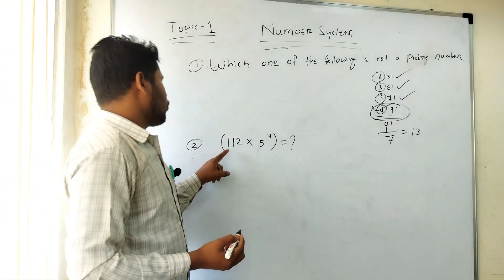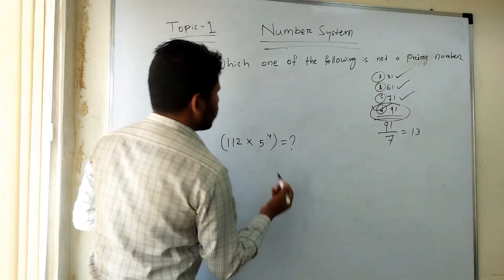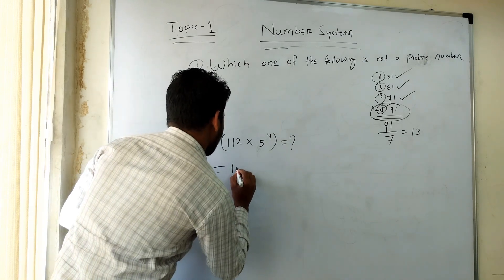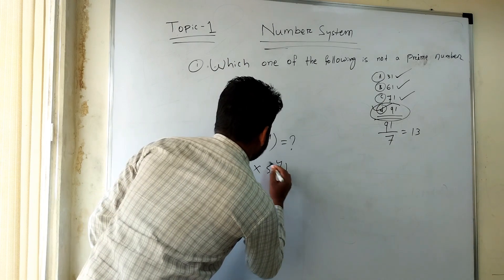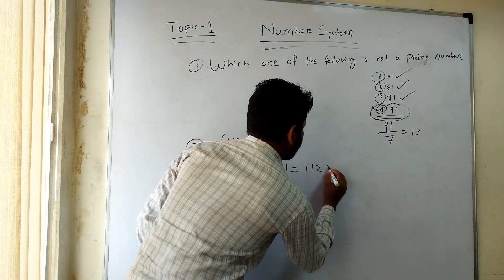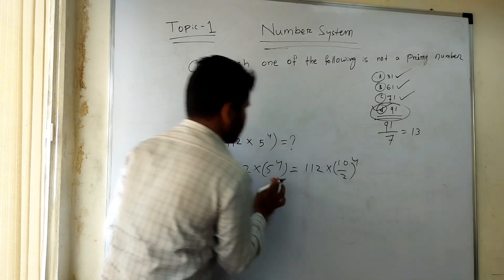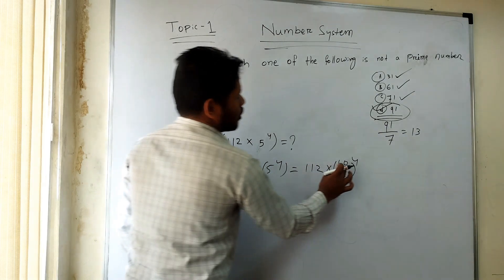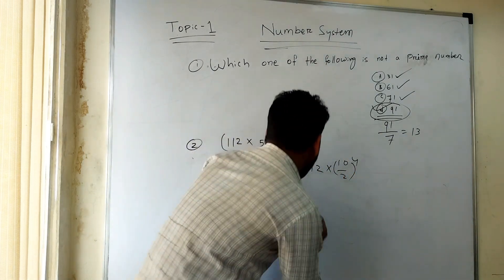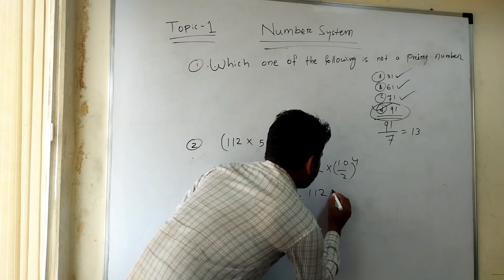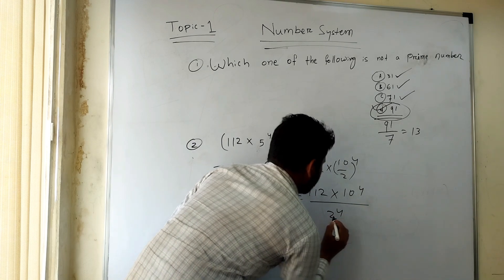Next question: 1,12 into 5 to the power 4. So what is the value of this? You can clearly rewrite it as 1,12 into 5 to the power 4. We can change it: that means 1,12 into (10 divided by 2) to the power 4. That means 1,12 into 10 to the power 4 divided by 2 to the power 4.